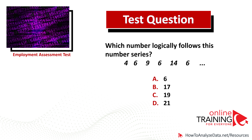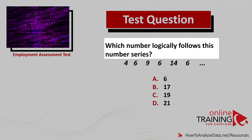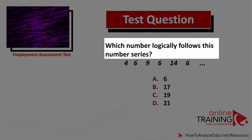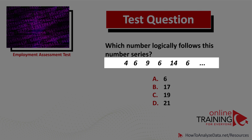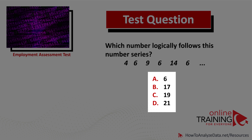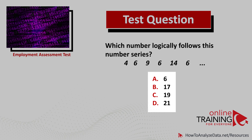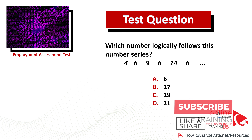Number sequences are often used to test candidates' abilities on the test. Which number logically follows this number series? We have the series: 4, 6, 9, 6, 14, 6. We need to determine the next number. The four choices are: A) 6, B) 17, C) 19, and D) 21.